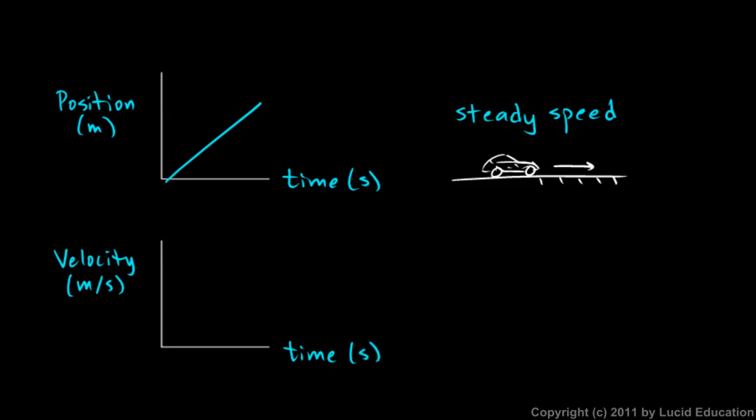If it's moving at a steady speed, both of these graphs will be for motion at a steady speed. If it's moving at a steady speed, that means it's not accelerating. That means the velocity does not change.